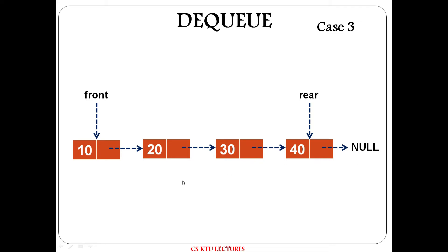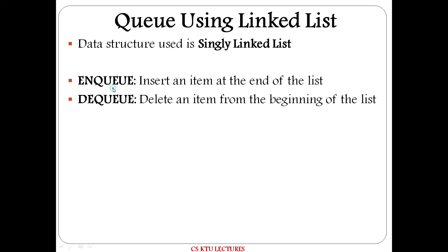In the Queue, one item delete happens at the front end. Select from front end — deleted. 10 is deleted. The front pointer now points to node 20. EnQueue means inserting a new item at the end of the singly linked list; DeQueue means deleting a new item from the beginning of the singly linked list.